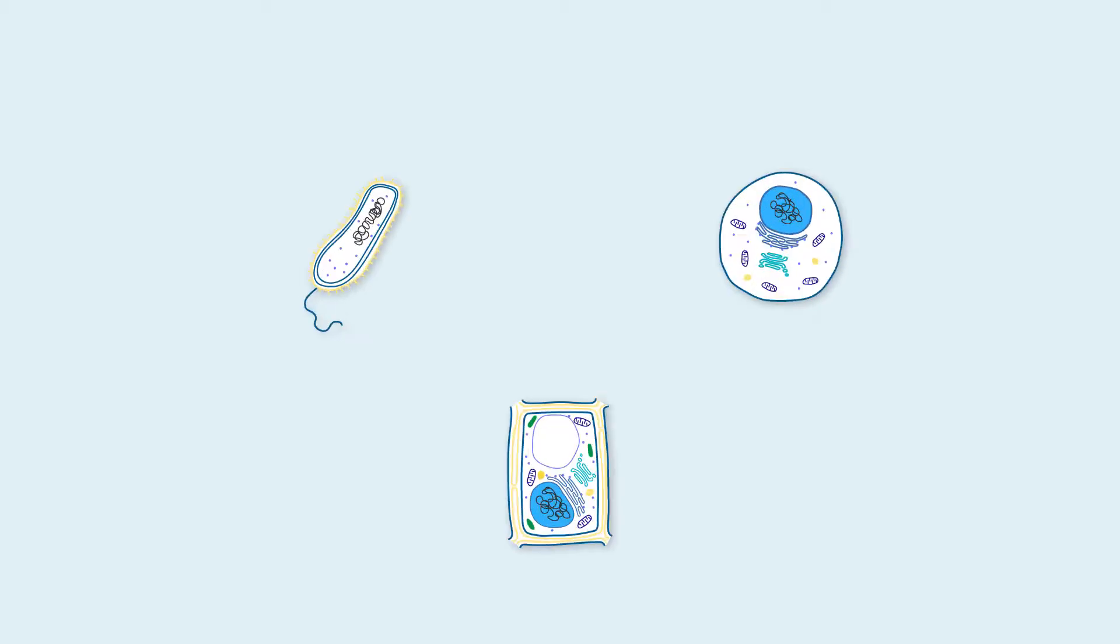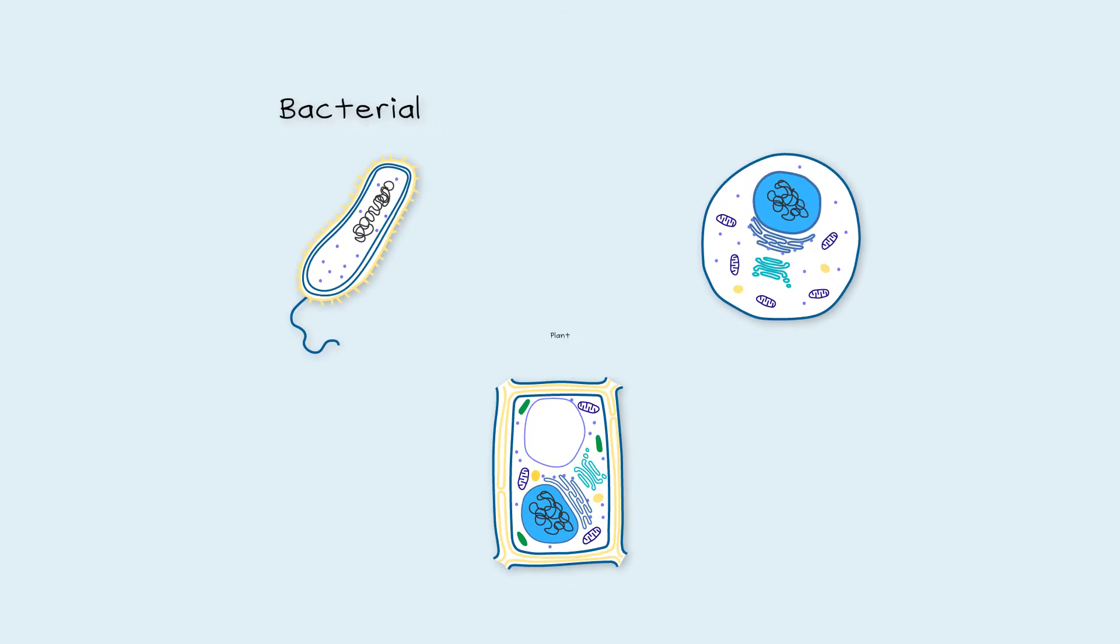You can see that a cell is made up of a whole bunch of different structures called organelles. Cells can either be prokaryotes or eukaryotes, which refers to whether or not the cell has a nuclear membrane. Let's compare three different kinds of cells: bacterial, plant and animal cells.